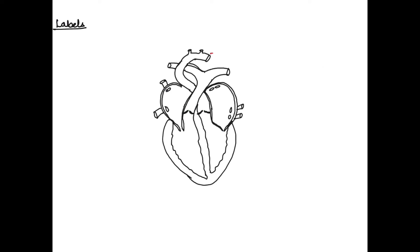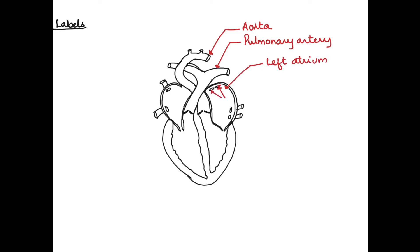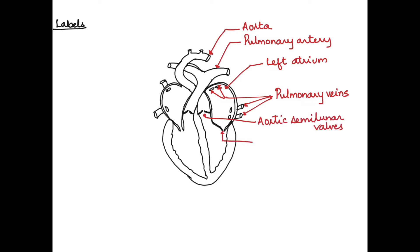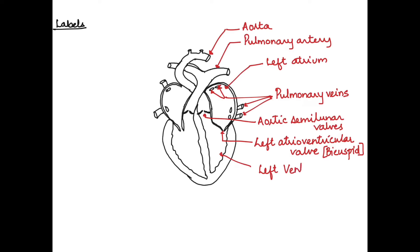Now let us label the parts of the heart. We begin with the aorta, then the pulmonary artery, the left atrium, and the pulmonary veins — which bring oxygenated blood from the lungs to the left atrium. Next is the aortic semilunar valve at the base of the aorta, then the bicuspid valve — the left atrioventricular valve — and finally the left ventricle, which contains oxygenated blood pumped out to the body parts.